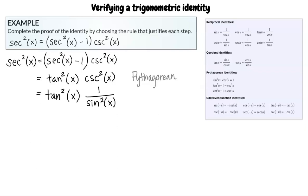Now, what changed in the second step? Instead of cosecant squared of x, there is now 1 over sine squared of x. That's right! Looking at the list of rules, this is a reciprocal identity.